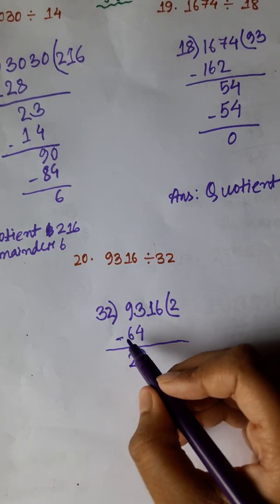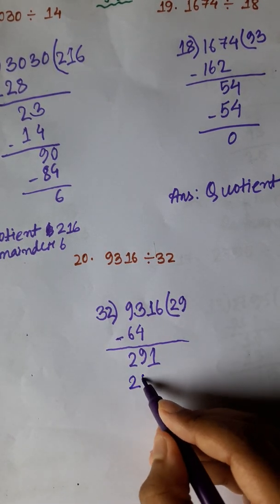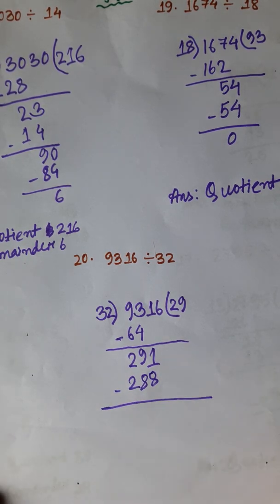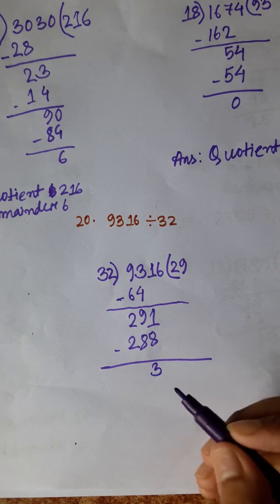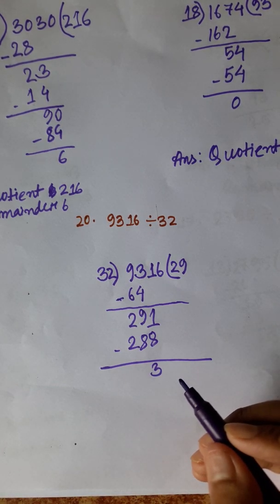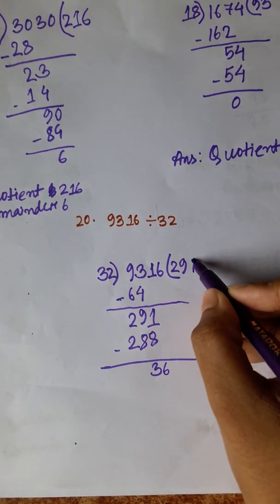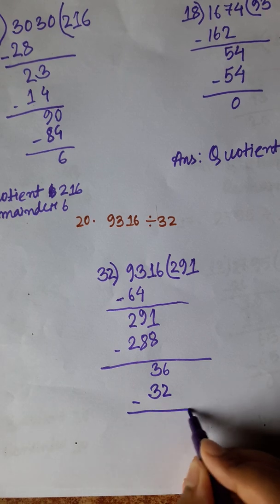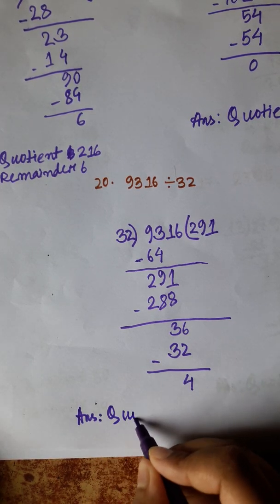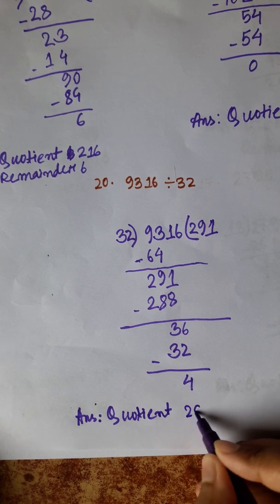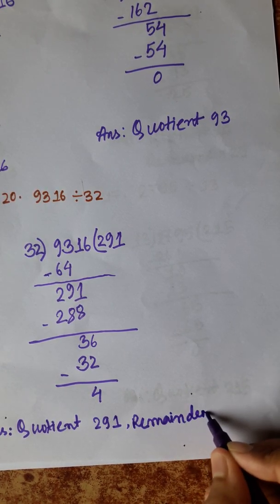Continuing the division steps: 13, 9, 7, 2, 3, 2, 1, 32, 9, 0, 288, 11, 8, 3, 1, 8, 1, 9, 9, 0, 32, 1, 0, 32, 4. So quotient 291, remainder 4.